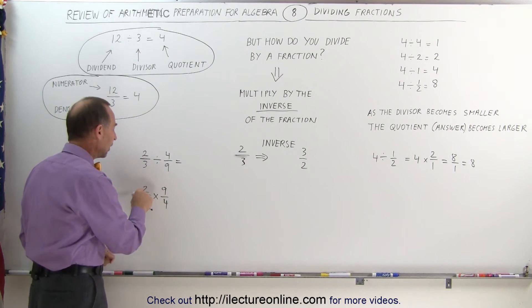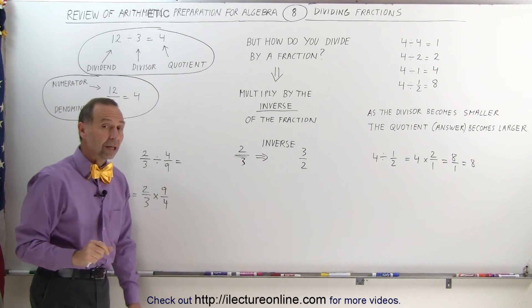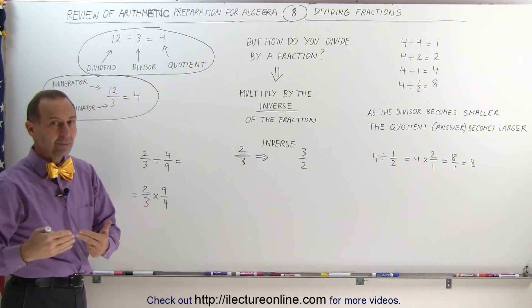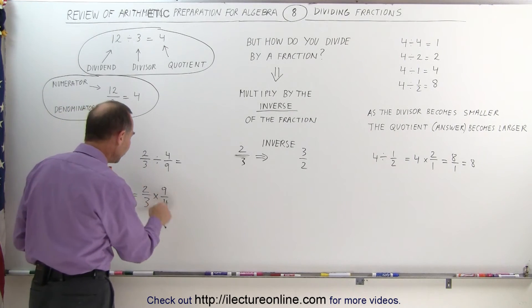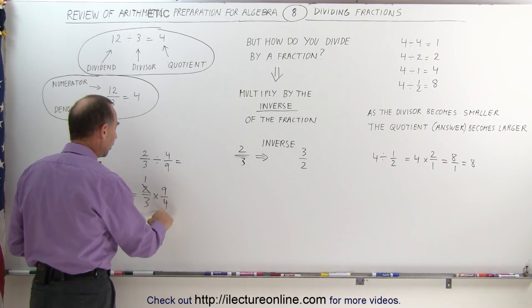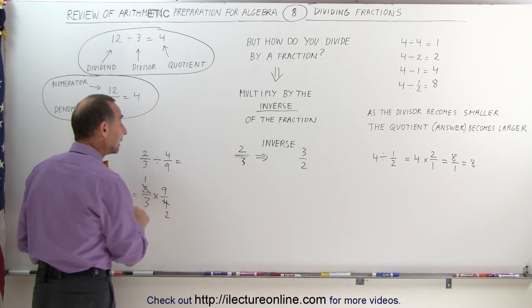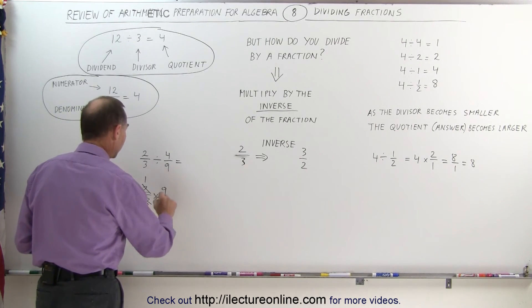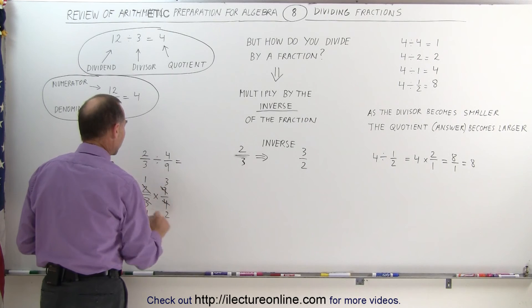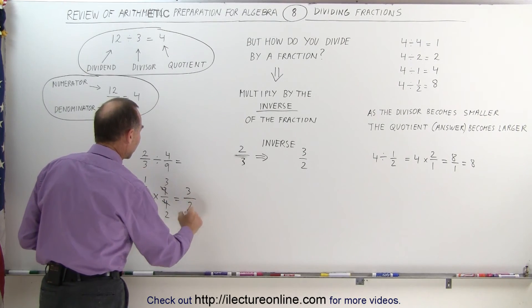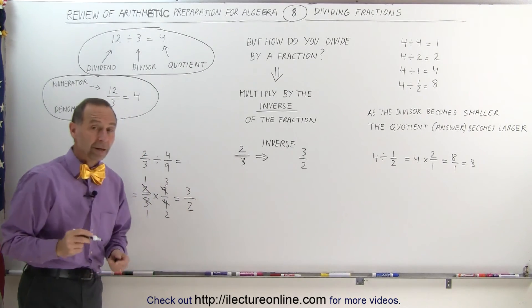So now you would multiply the numerators together, you would multiply the denominators together, or before you do that, you may want to simplify just like what we've done before. 2 and 4, they're both divisible by 2, so 2 divided by 2 is 1, 4 divided by 2 is 2. And 3 and 9, they can be divided by 3. 3 divided by 3 equals 1, 9 divided by 3 equals 3. The result of this becomes 1 times 3 in the numerator, divided by 1 times 2 in the denominator, so the answer is 3 divided by 2.